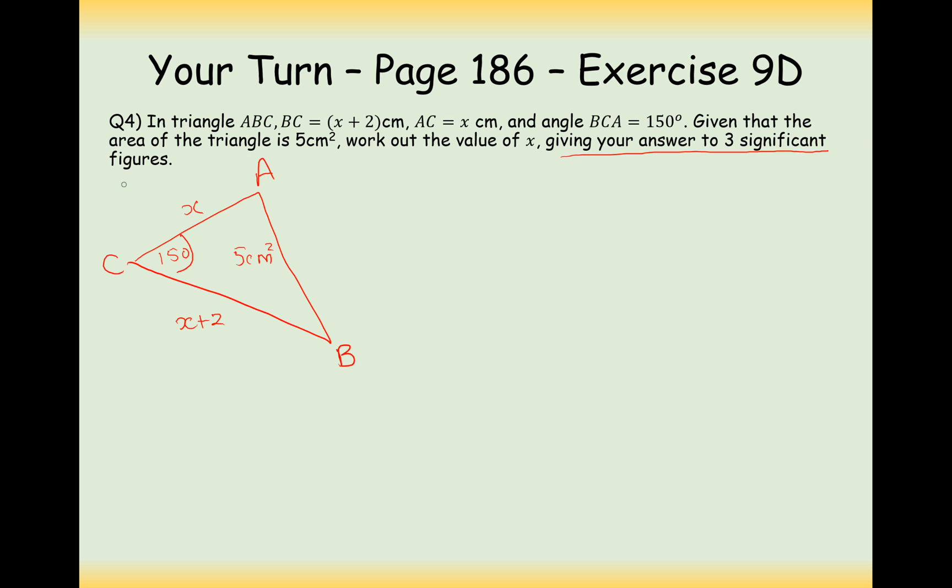Now giving this answer to 3 significant figures, that's a bit of a clue that I'm going to get a decimal answer here. I would expect to be a little bit confused if I was to get 5 out of this. So substitute the numbers into the formula. So 5 is equal to the area, which is equal to half, times A, which is x plus 2, times B, which is x, times sine of 150.